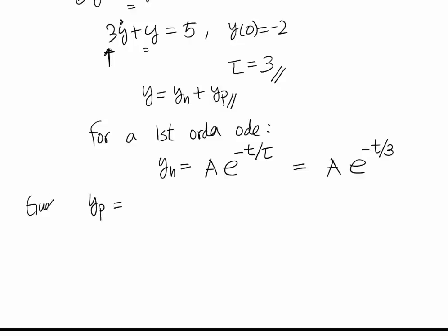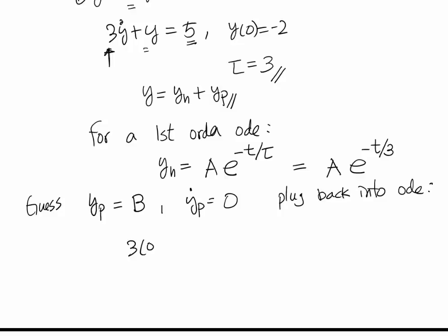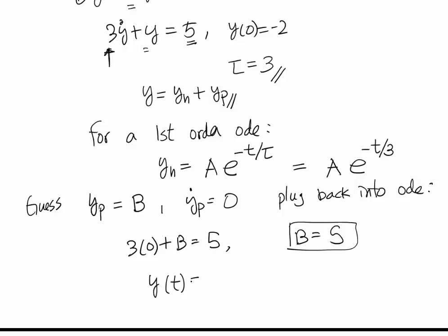We guess the particular solution to be of a similar form to the forcing function. In this case the forcing function is a constant, so I'm going to guess my particular solution is a constant b. The derivative of a constant is equal to 0, so I plug back into the ODE and get 3 times 0 plus b equals 5, giving b equal to 5. As a result, the general solution is a times e to the minus t over 3 plus 5.